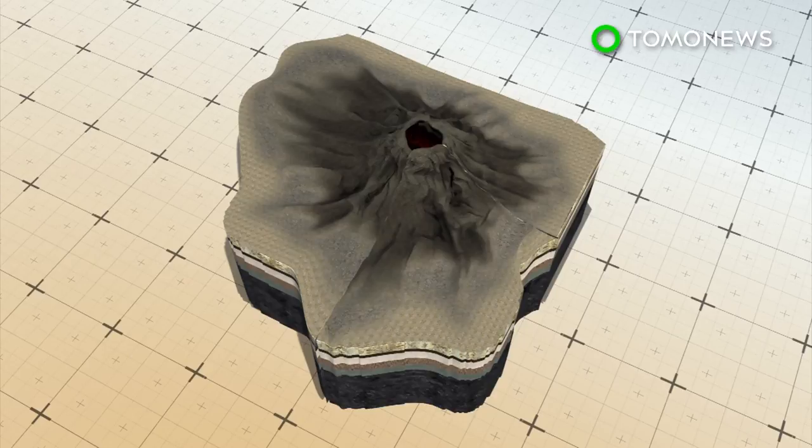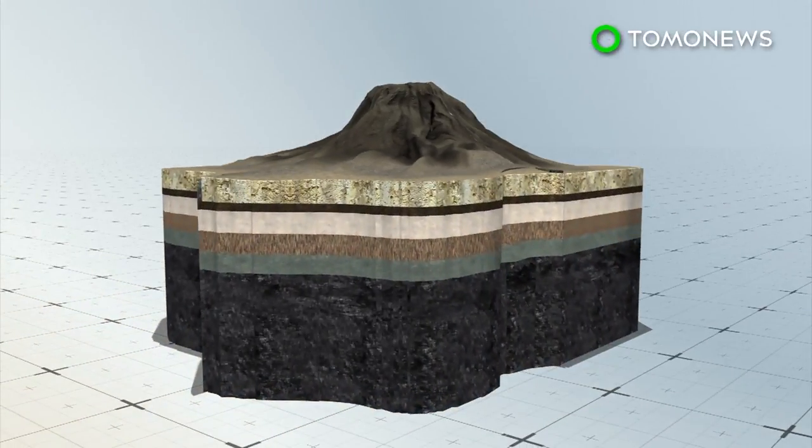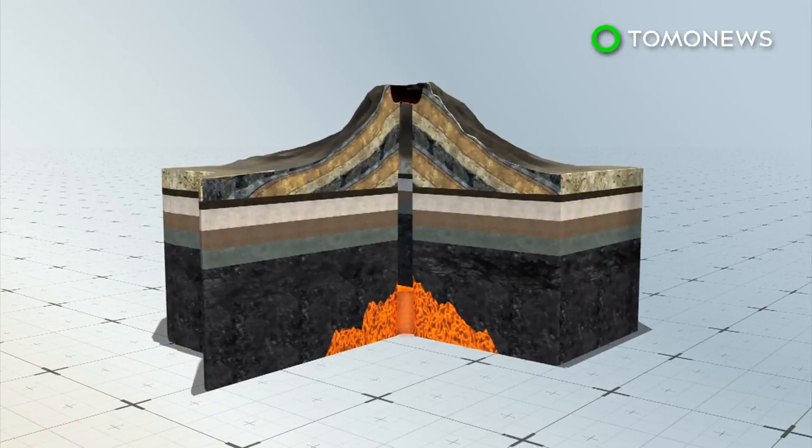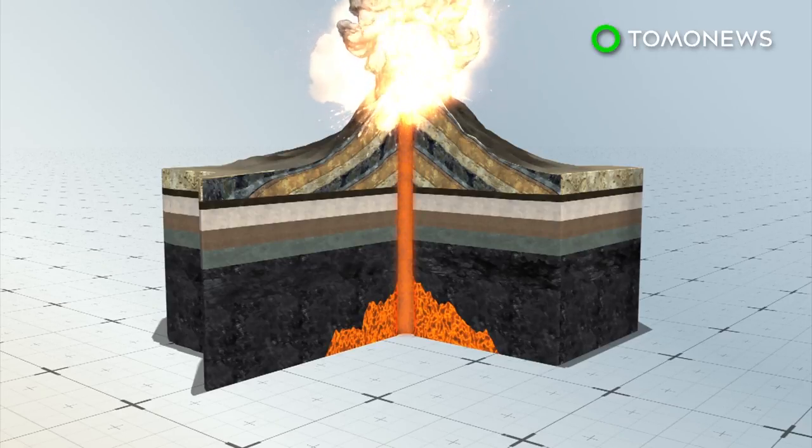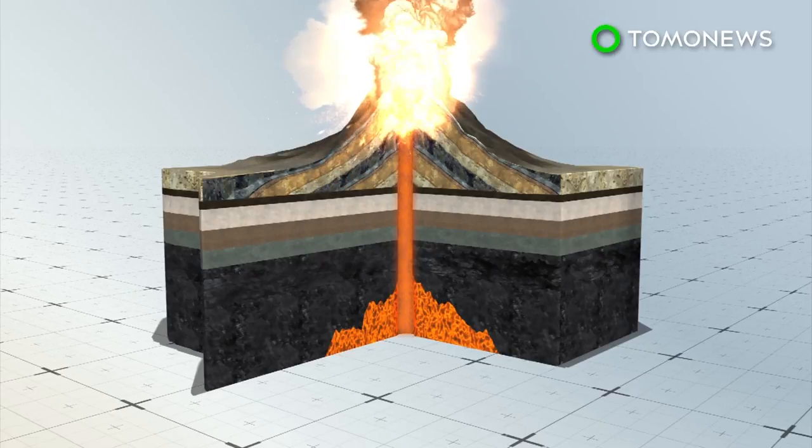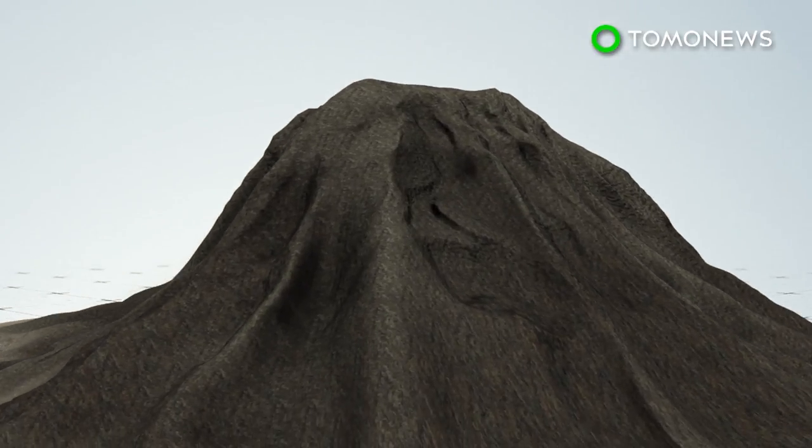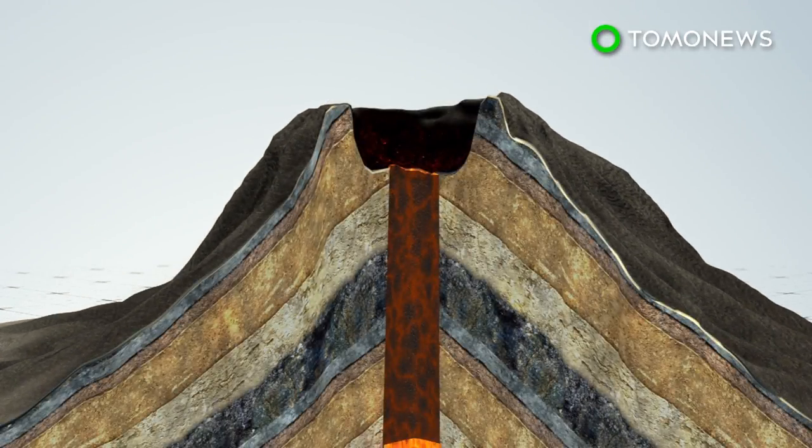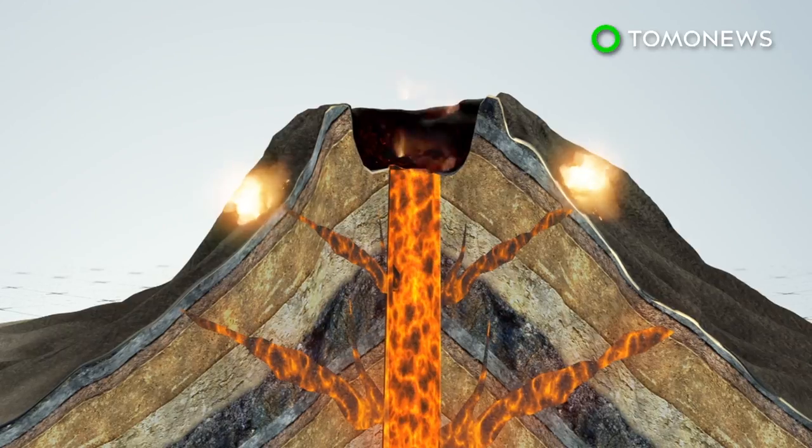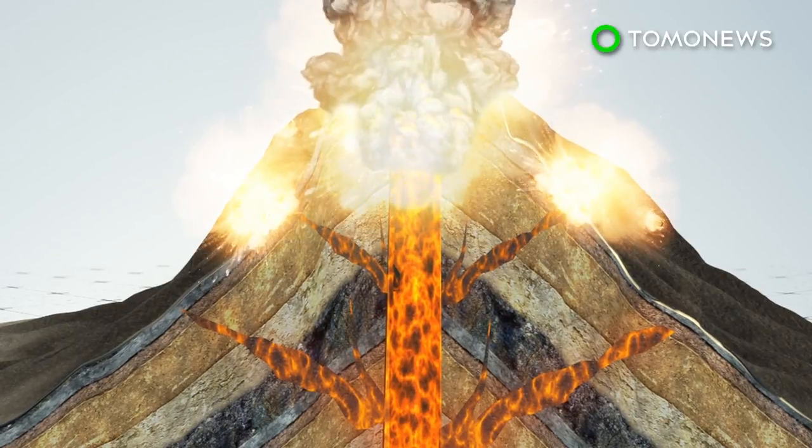Cinder cone volcanoes occur when lava is ejected from a volcanic vent. Lava is shot into the air and pieces accumulate around the vent. This creates a circular or oval-shaped cone with a bowl-shaped crater at the top. Composite volcanoes contain a conduit system that channels magma to the surface. These volcanoes can have clusters of vents along the sides of the mountain where lava flows out.